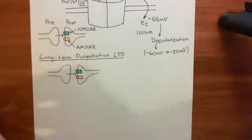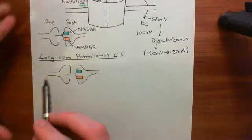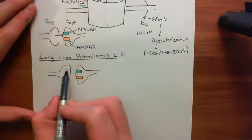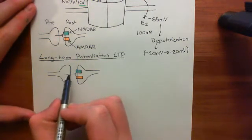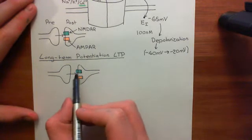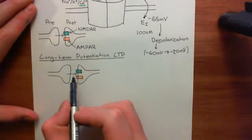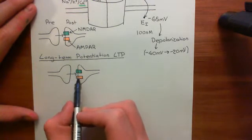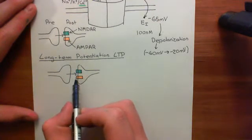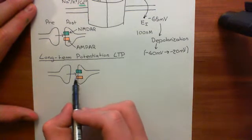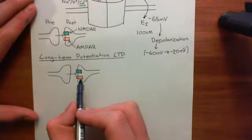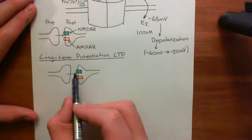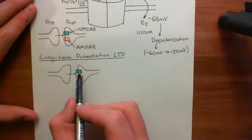Let's say that we stimulate the presynaptic neuron, and the presynaptic neuron fires an action potential, releasing glutamate onto the postsynaptic neuron. Glutamate goes over and binds to both the NMDA receptors and the AMPA receptors. What it will then trigger is the opening of the AMPA receptors, but it will not trigger the opening of the NMDA receptors.